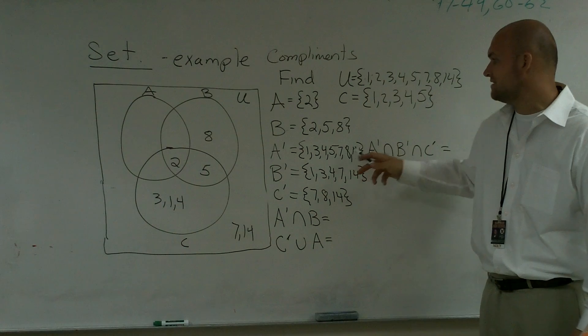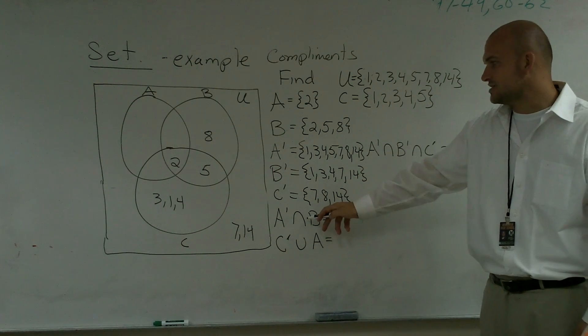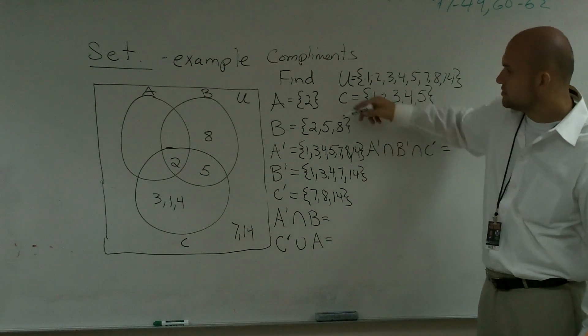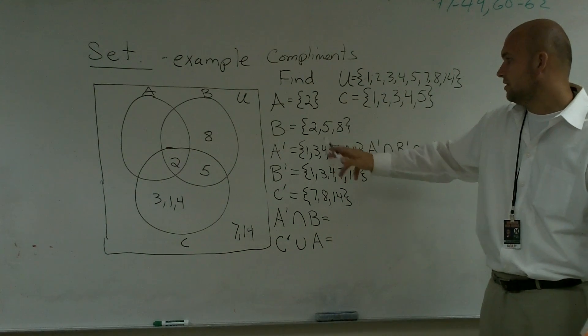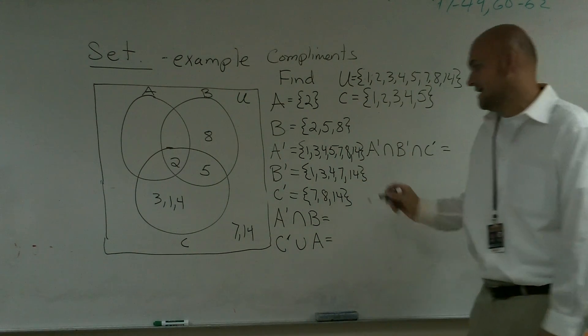1, 3, 4, 5, 7, 8, and 14, intersection with B, which is 2, 5, and 8. So what do these two elements have in common? Well, they both have a 5 and they both have an 8.